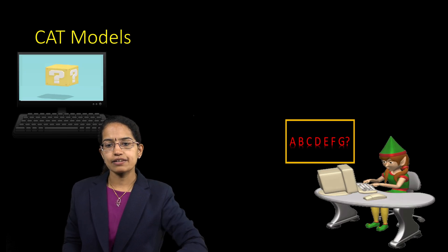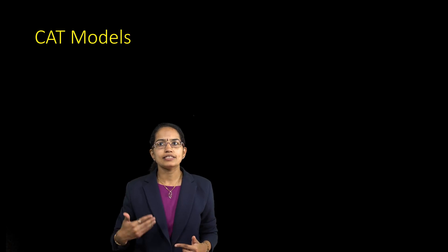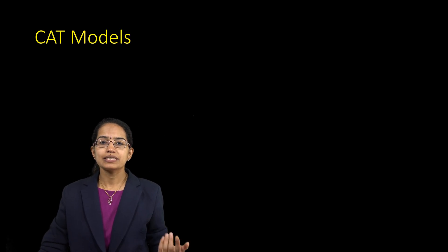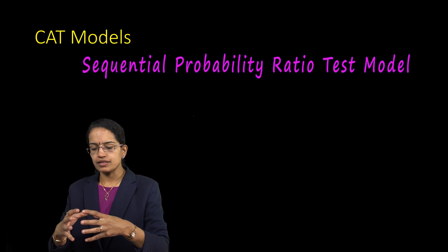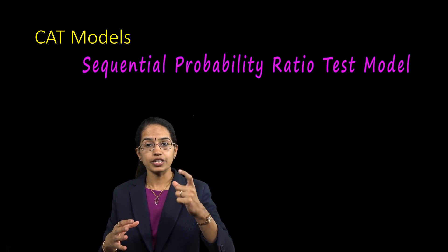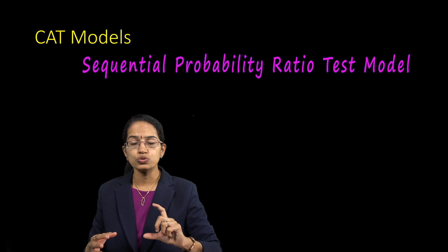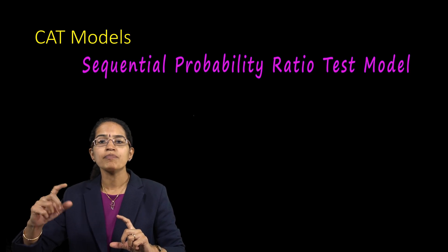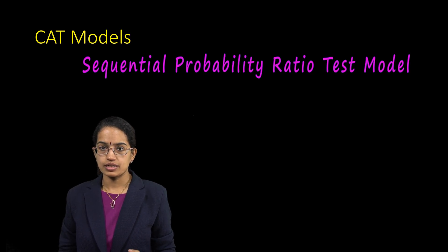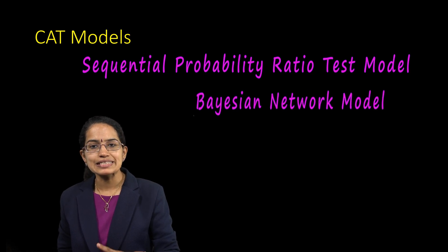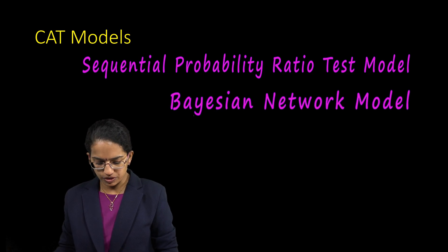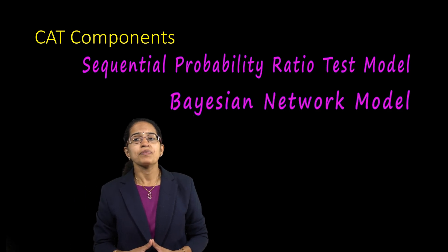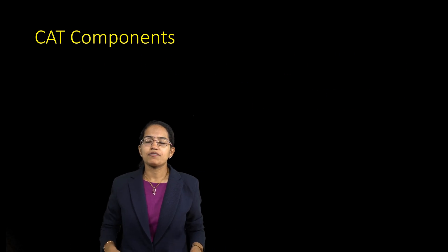Beyond item response theory, there is the sequential probability ratio test (SPRT) model, which reduces testing time while maintaining quality and the effective number of questions attempted. There is also the Bayesian network model, which works by understanding the dependencies between various variables to inform question selection.